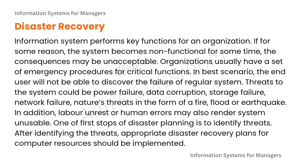Information systems perform key functions for an organization. If the system becomes non-functional, the consequences may be unacceptable. Think about what would happen if the same ransomware attack happened in an organization's work laptop, or if a natural disaster occurred, power went off, and your only backup server failed. Organizations usually have a set of emergency procedures for critical functions. In the best scenario, the end user will not be able to discover the failure of the regular system. Threats to systems could be power failure, data corruption, storage failure, network failure, or nature's threats in the form of fire, flood, or earthquake. Labor unrest or human errors may also render the system unusable.